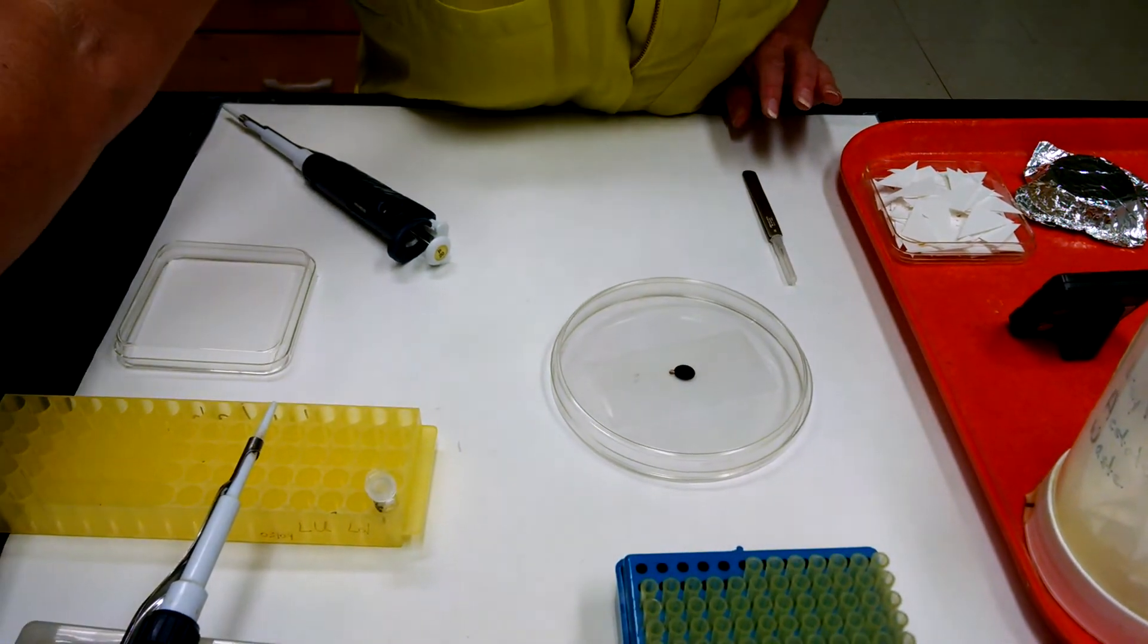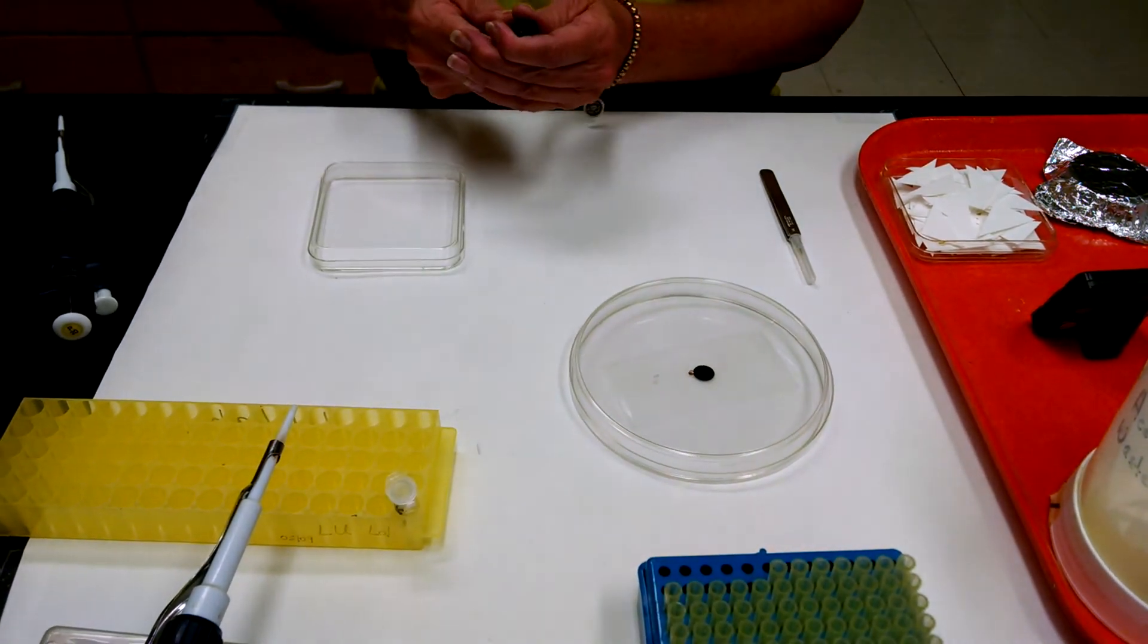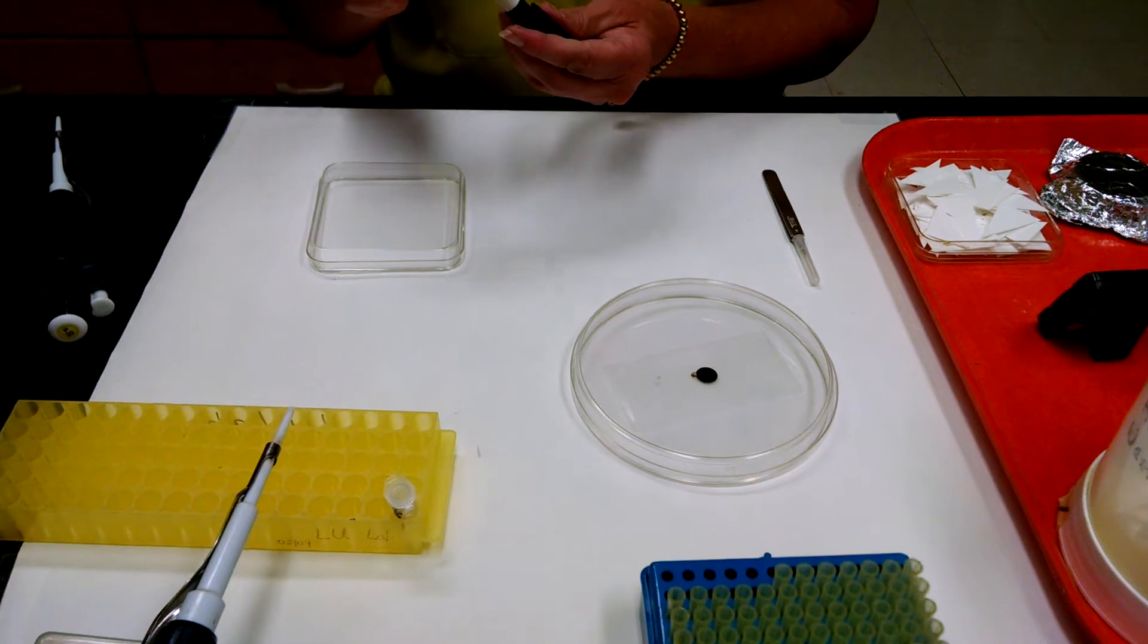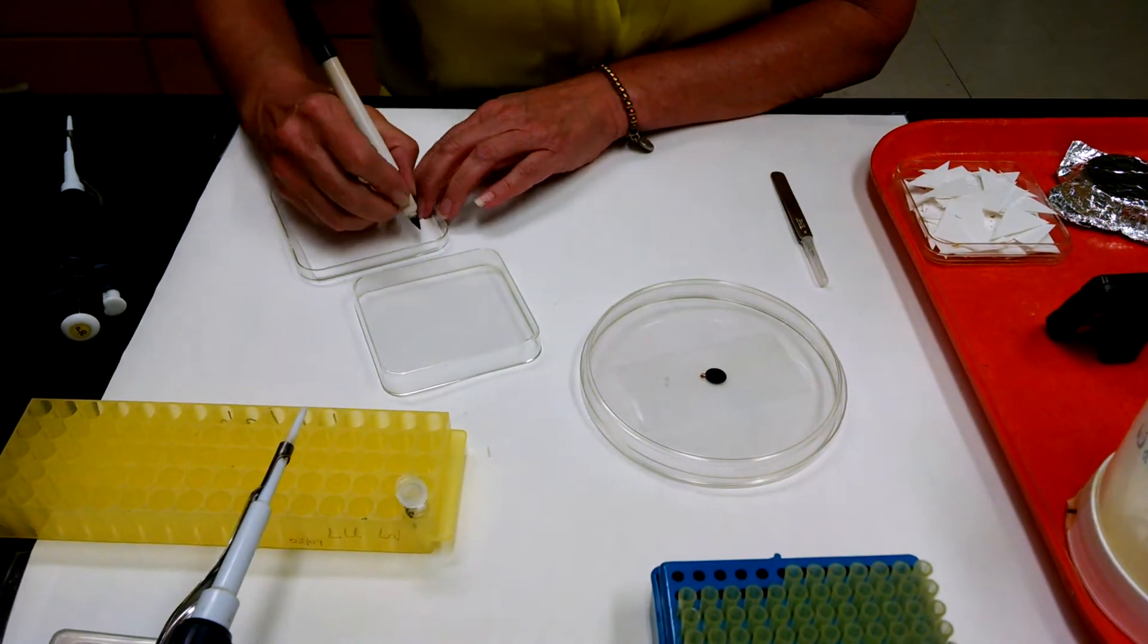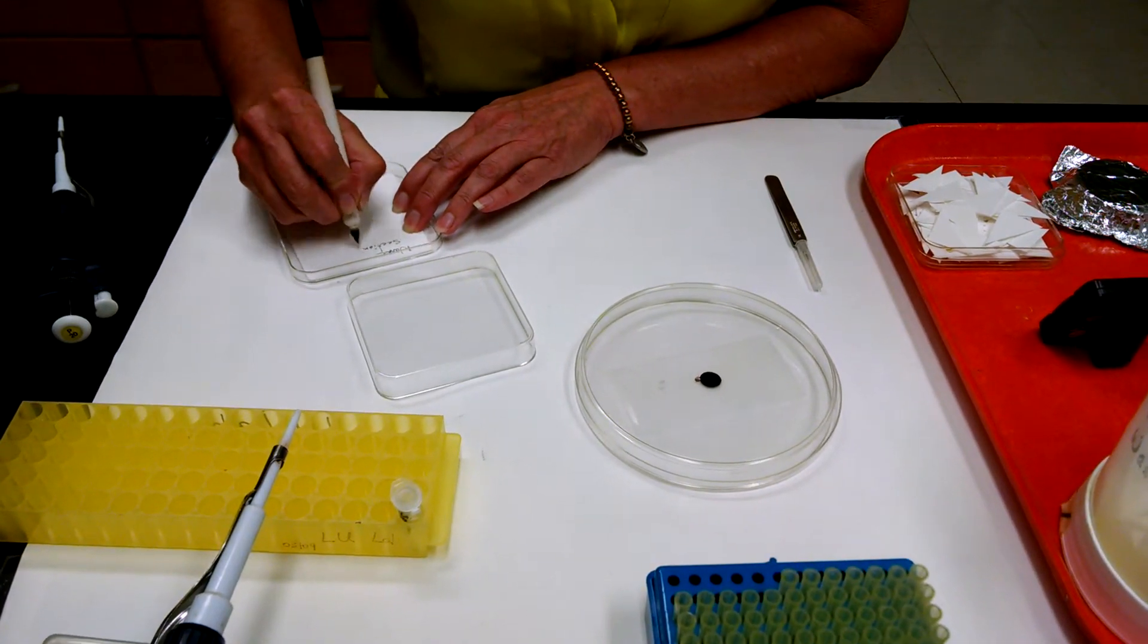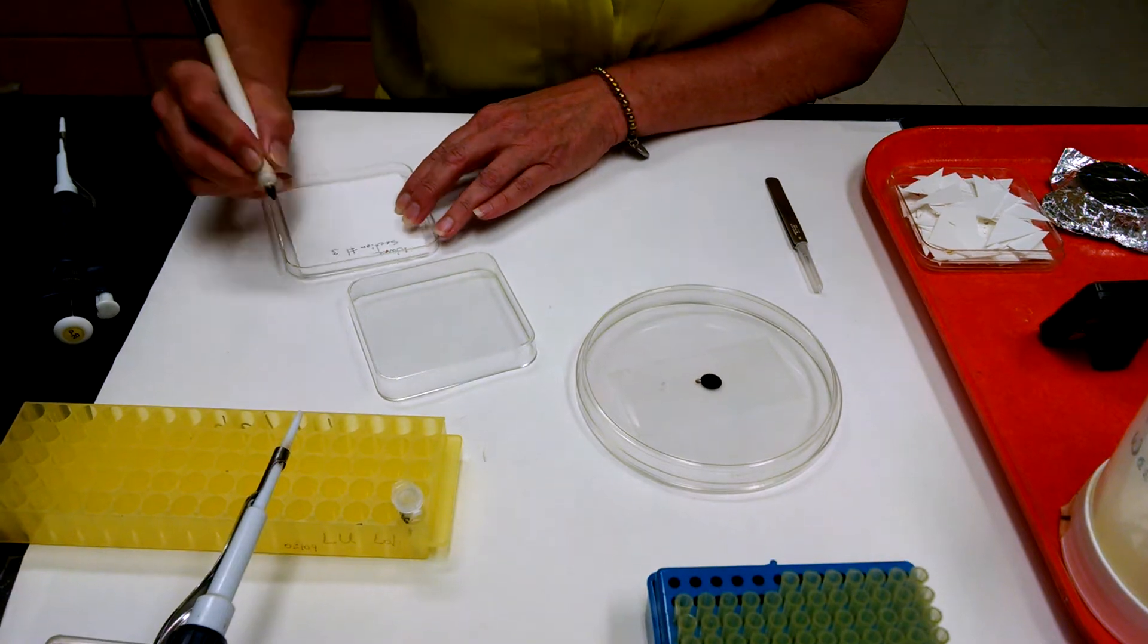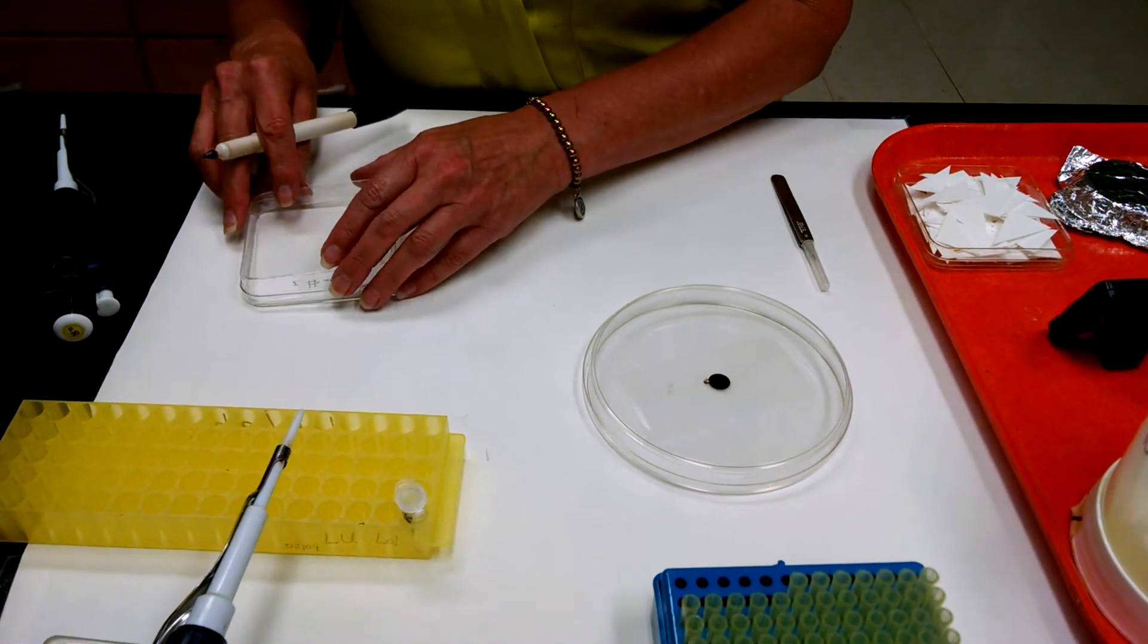During these three minutes what we're going to do is we're going to label this box that we're going to store the grid in. And what you're going to do is you're going to put your name and your section number. Now this is incubating for three minutes.